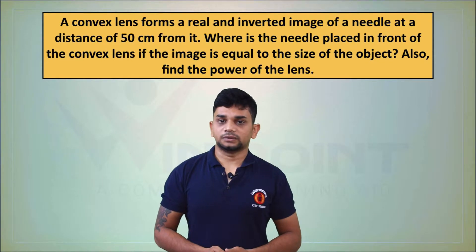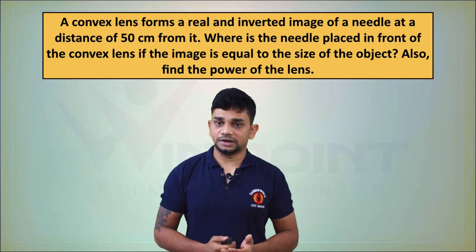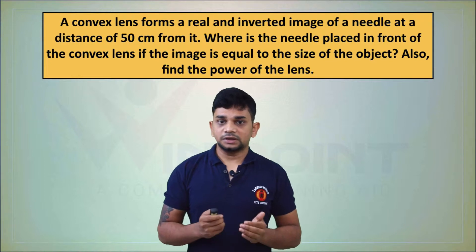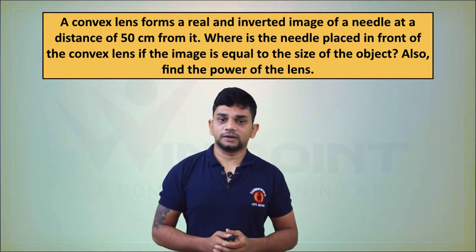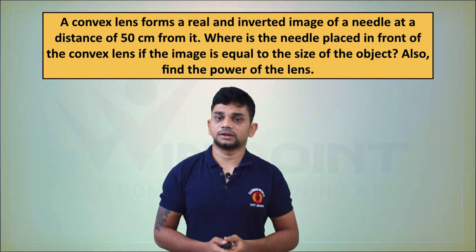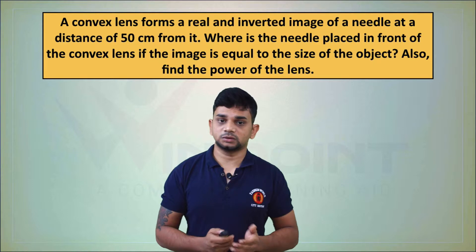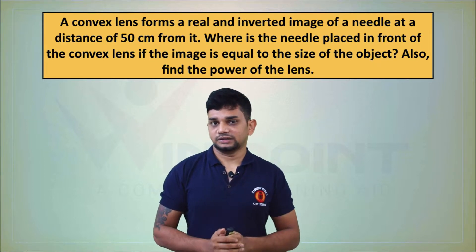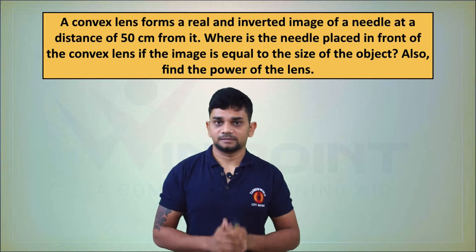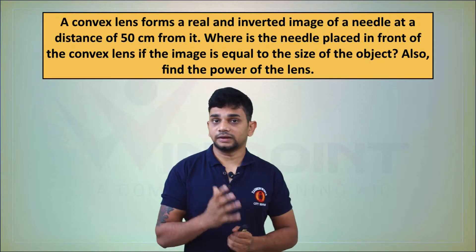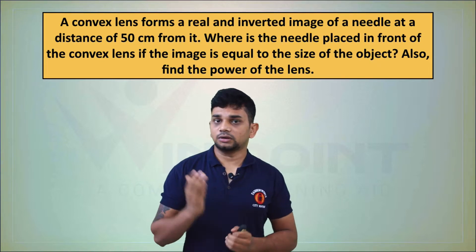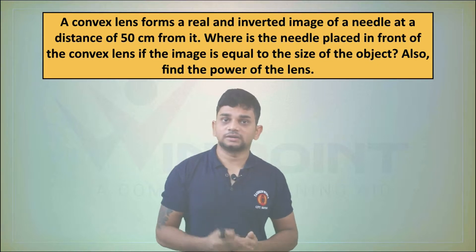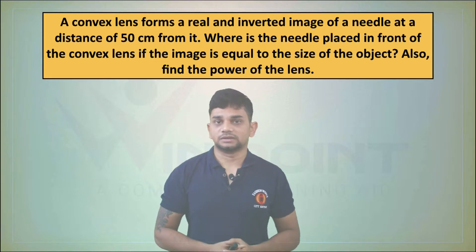A convex lens forms a real and inverted image of a needle at a distance of 50 centimeters from it. Where is the needle placed in front of the convex lens if the image is equal to the size of the object? Also find the power of the lens. Since the size of the object and size of the image are both the same, we need to think about our ray diagrams.